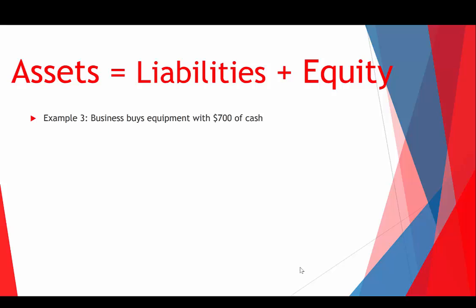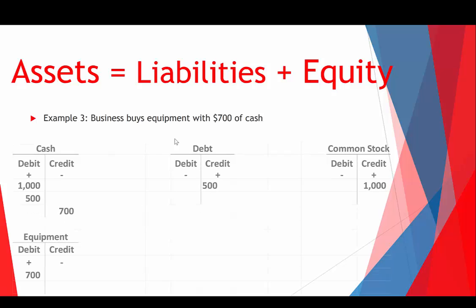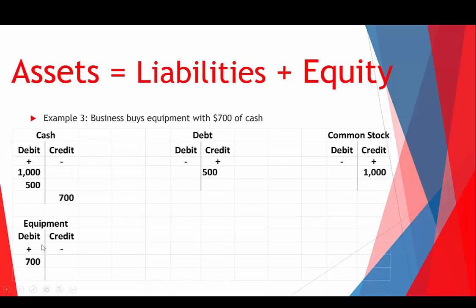Example three shows that we don't always have to have one item on each side. In example three, you buy equipment for $700 using cash. We get another asset account — equipment — debited for $700 because we have more equipment, but we paid with cash so cash decreases, meaning we credit cash for $700. The $700 increase on one asset and the $700 decrease on another nets to zero, so we're still left with $1,500 in total assets and $1,500 in liabilities and equity.